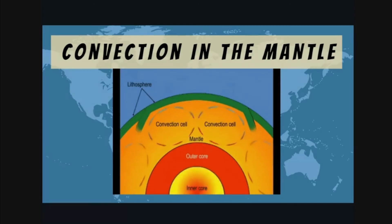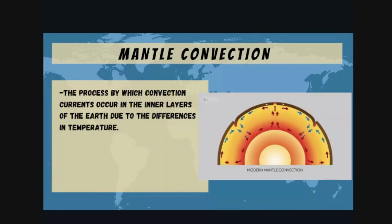Creating what we call the convection current in the mantle. Mantle convection is the process by which convection currents occur in the inner layers of the earth due to the differences in temperature. Because the temperatures of materials near the core and materials far from the core are different, there is a tendency for convection current movement. Hot materials rise up and cold materials move downward in a continuous cycle.